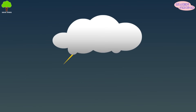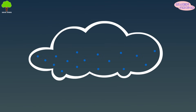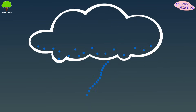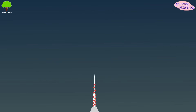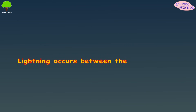Lightning is also static electricity. Heavier, negatively charged particles sink to the bottom of the cloud. When the positive and negative charges grow large enough, a giant spark — lightning — occurs between the two charges.